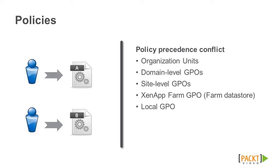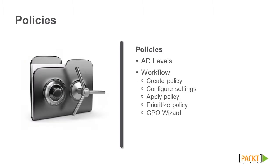For example, a Citrix administrator creates policy A through the App Center that enables client file redirection for sales employees. Meanwhile, another administrator creates policy B through the Group Policy Management Editor that disables this function. When the sales employees log onto the farm, policy B is applied and policy A is ignored. This happens because policy B was processed at the domain level and policy A was processed at the ZenApp farm GPO level.